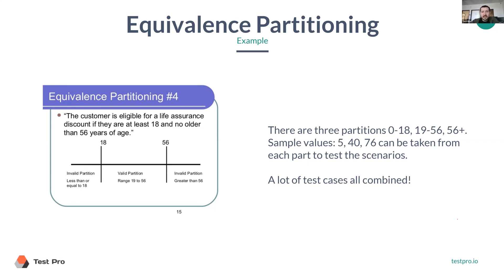The same applies to the second partition, between 19 to 56 — we can pick any number, let's say 40, 30, or 25, doesn't matter. And for something above 56, we can pick like 76, for example. That's how we test each partition.